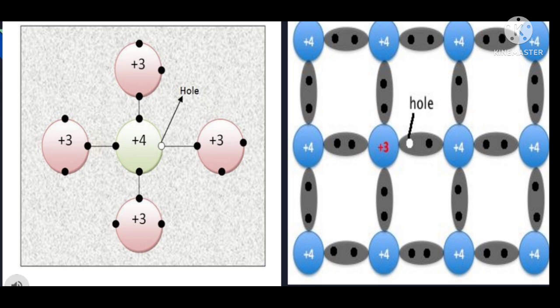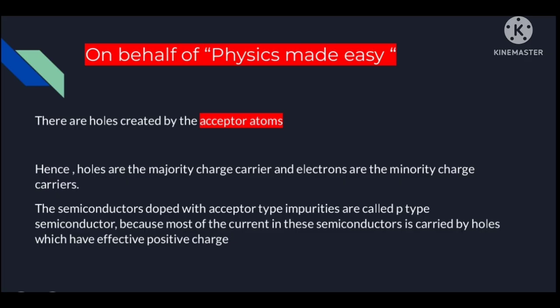As seen in the figure, a hole is created and it behaves like a positively charged particle. This hole attracts electrons from neighboring covalent bonds to fill itself, and a new hole is created at the site from which the electron was attracted. In this way, a number of holes are formed by adding more and more trivalent atoms. Therefore, holes are the majority charge carriers and electrons are the minority charge carriers.